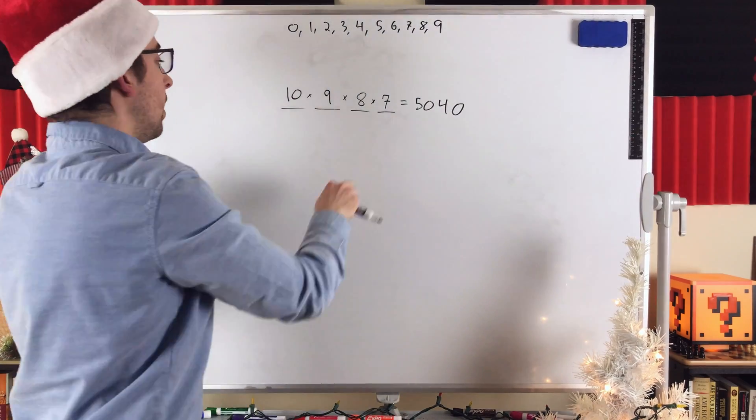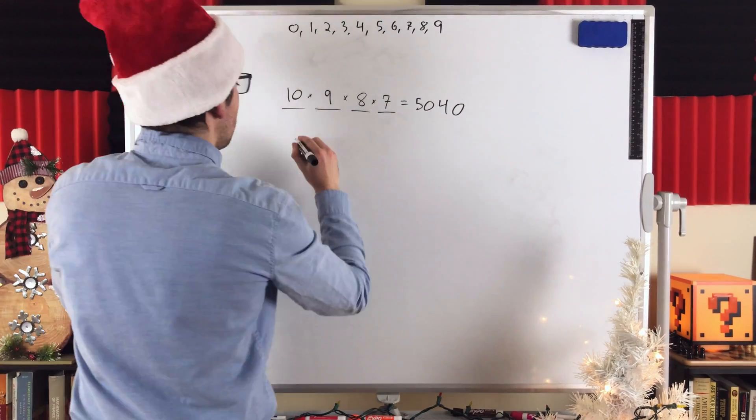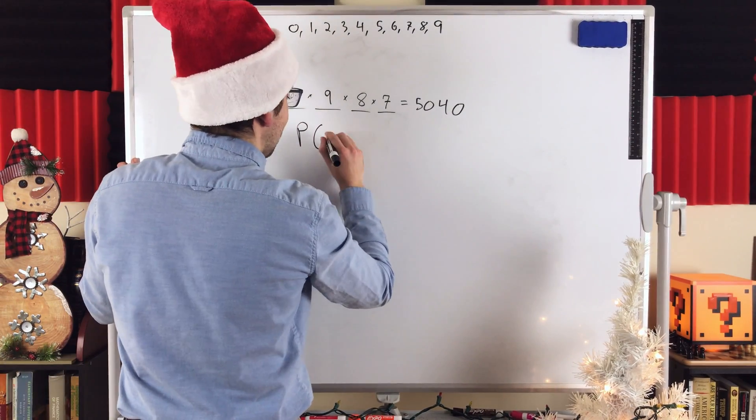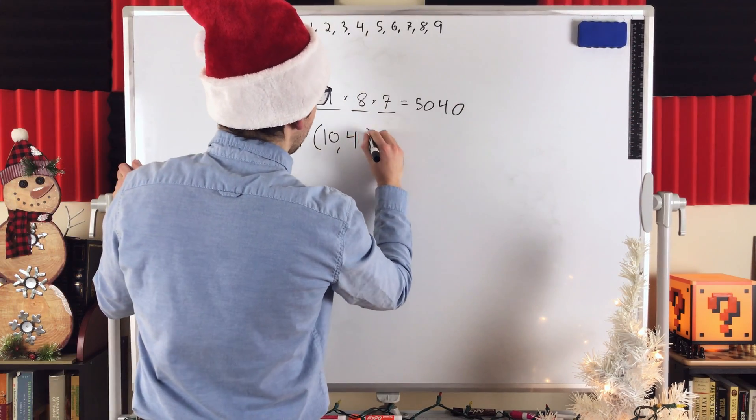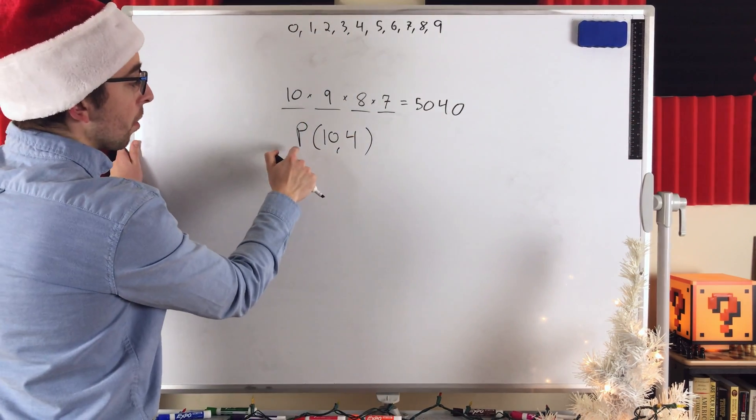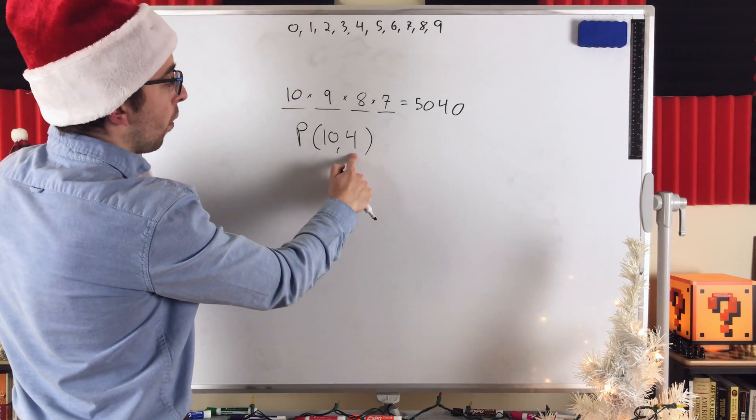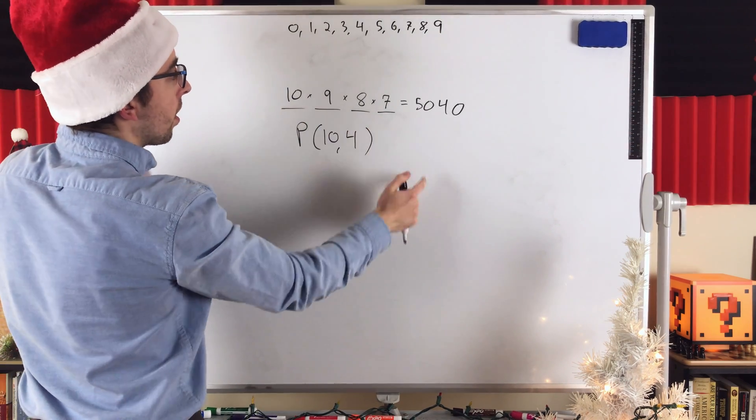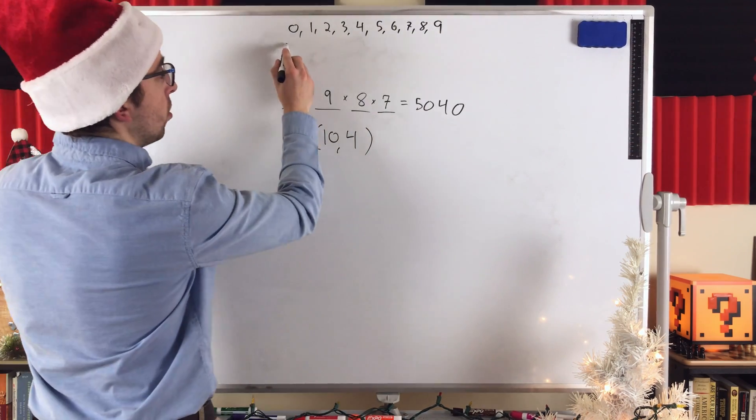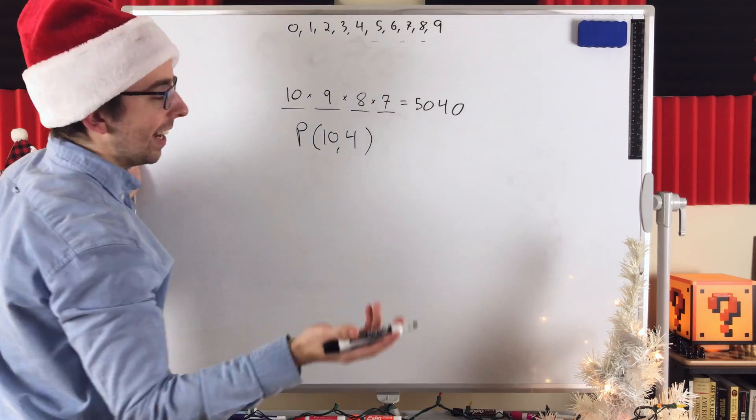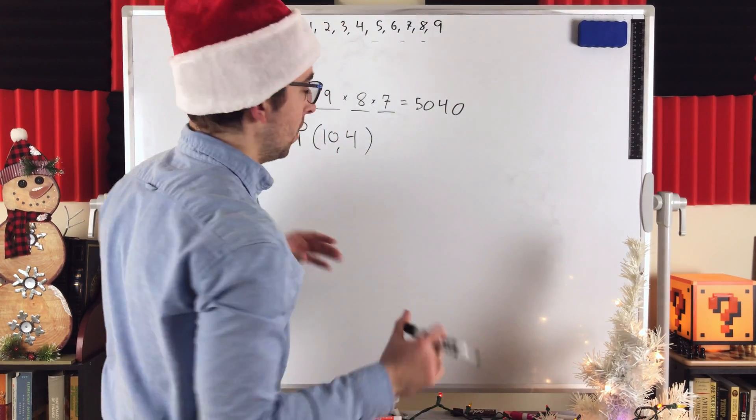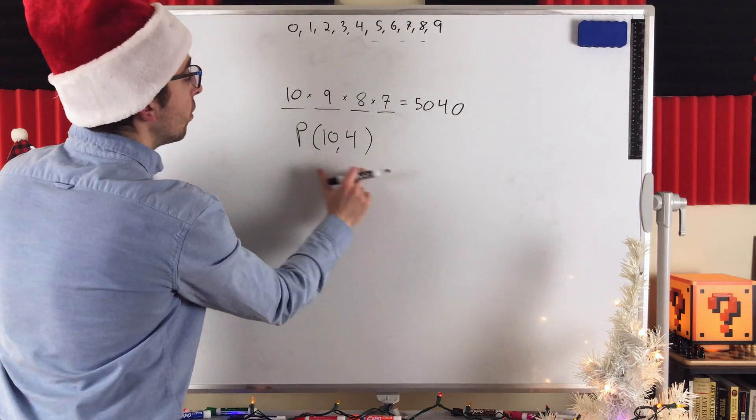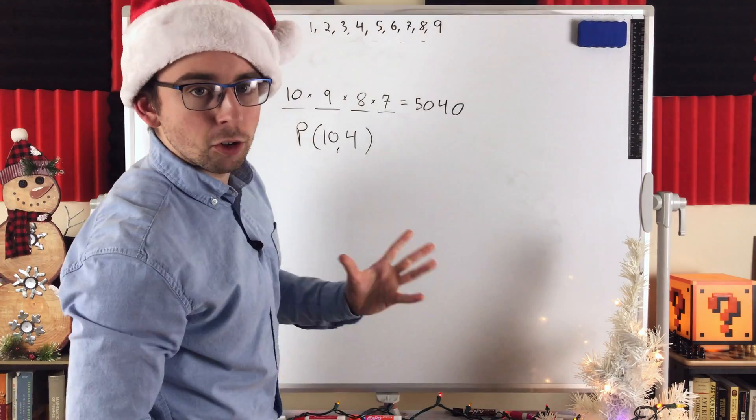Now, this could also be solved using what is called the permutation formula, often written like this, nPr. This is the number of ways of ordering r objects from a collection of n objects, which is what we've got here. A collection of 10 digits, and we're ordering 4 of them to create a code. And implicit in this formula is that repetition is not allowed. We're not allowed to use the same digit multiple times.